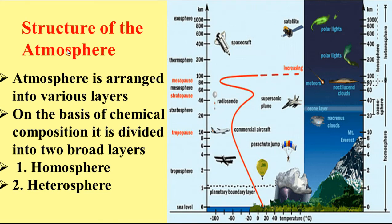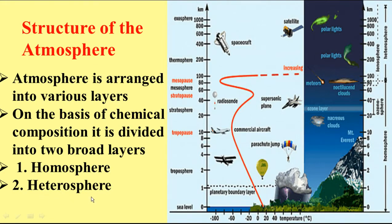Next, we shall discuss some important concepts about the structure of the atmosphere. The atmosphere is a thin layer of about 1000 kilometers in thickness. On the basis of the composition of different chemicals and gases, the atmosphere is broadly divided into two layers: one is the homosphere and the second one is the heterosphere. The homosphere contains homogeneous elements, while the heterosphere contains heterogeneous elements.